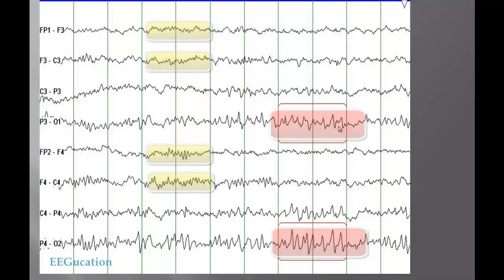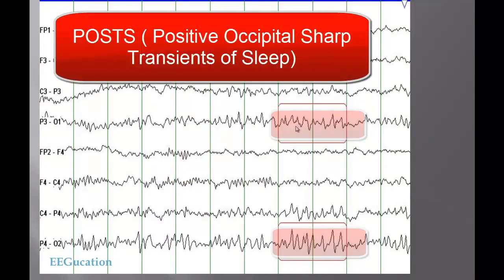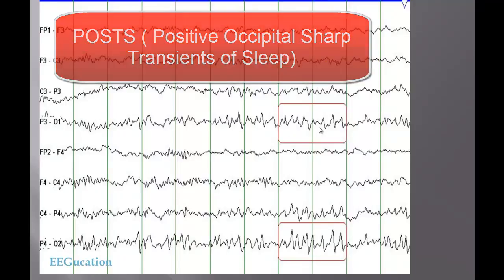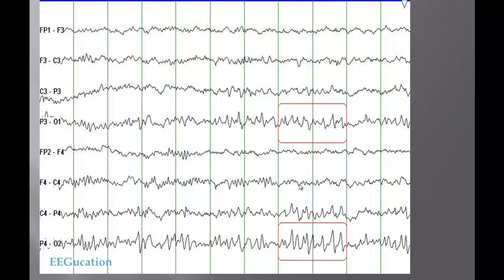What you see here, the sharp activity here, these are POSTS, which stands for Positive Occipital Sharp Transient of Sleep. You see these in sleep, typically at an early age but more common between 15 and 50 years of age. In rare instances you will see it in elderly patients as well. POSTS are benign variants, these have a sharp morphology but do not increase your risk for having seizures.